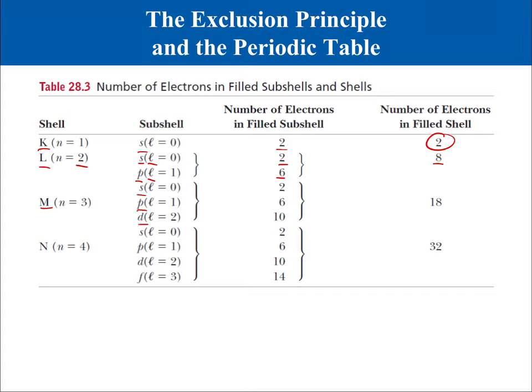The L shell corresponding to a principal quantum number of 2 can have L values of zero and one, corresponding to S and P subshells. The S shell holds two electrons, but the P subshell can hold up to six electrons. The M shell has subshells S, P, and D which are filled by 2, 6, and 10 electrons respectively, for a total of 18. The N shell has four possible subshells S, P, D, and F, which hold 2, 6, 10, and 14 electrons respectively, for a grand total of 32 electrons.